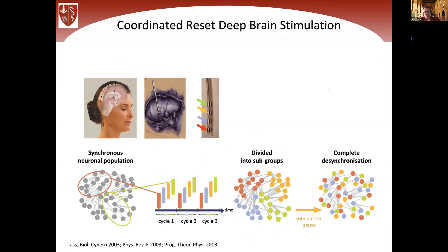We developed a number of desynchronizing techniques, and coordinated reset — CR — turned out to be very robust, particularly for clinical applications. The principle is as follows: these balls symbolize neurons. For deep brain stimulation, you implant an electrode, check which contacts are optimal, and then stimulate as strongly as possible — increasing the amplitude until you induce side effects, then going just below the side effect level.